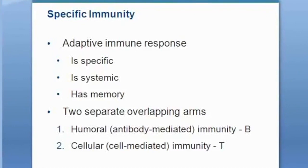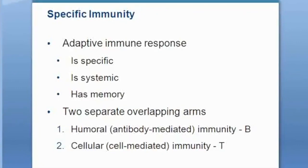How does it have memory? When a T cell or B cell gets activated, the first thing it does is make a whole bunch of cells, and a lot of those cells become memory cells. T cells and B cells that are active — many of them become memory cells which can live for decades.